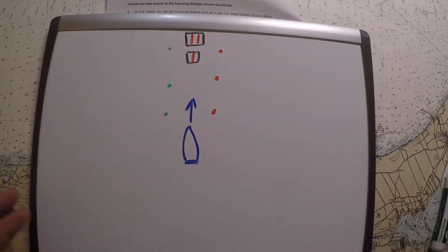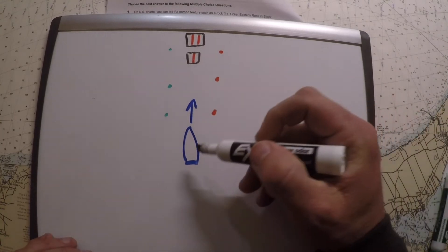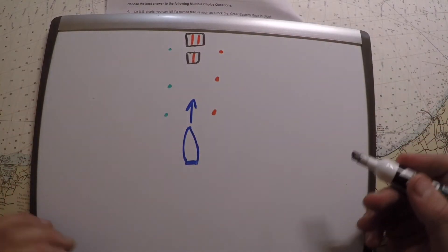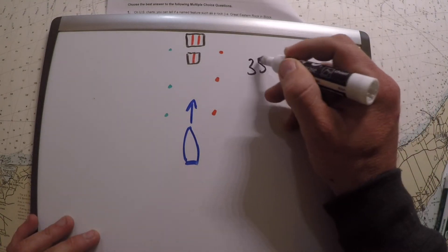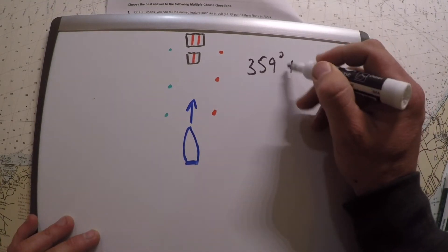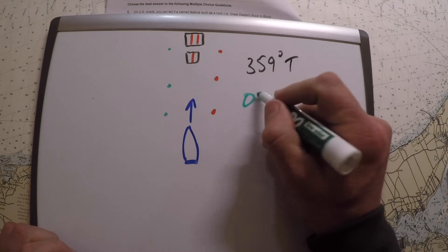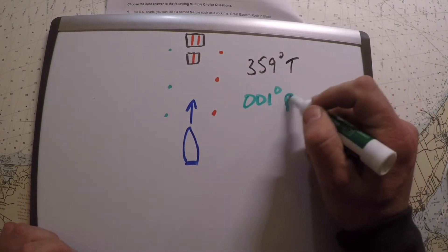It's asking you what is the gyro compass error. In essence, what they're saying is the situation is thus: your vessel's proceeding down a channel, you see two range boards in line, so you know you're right on that. And it's saying that the chart tells you that this is 359 degrees true according to the chart, but your gyro compass is reading 001 degrees per gyro compass.